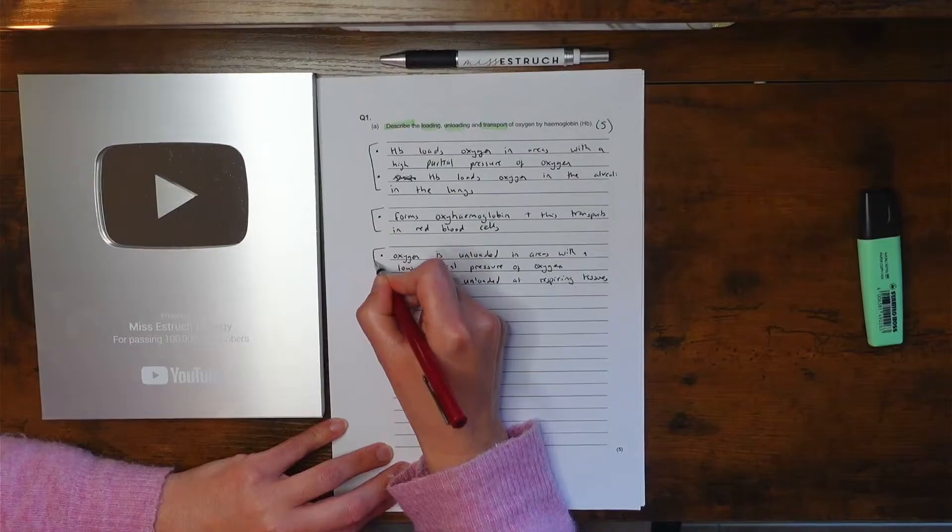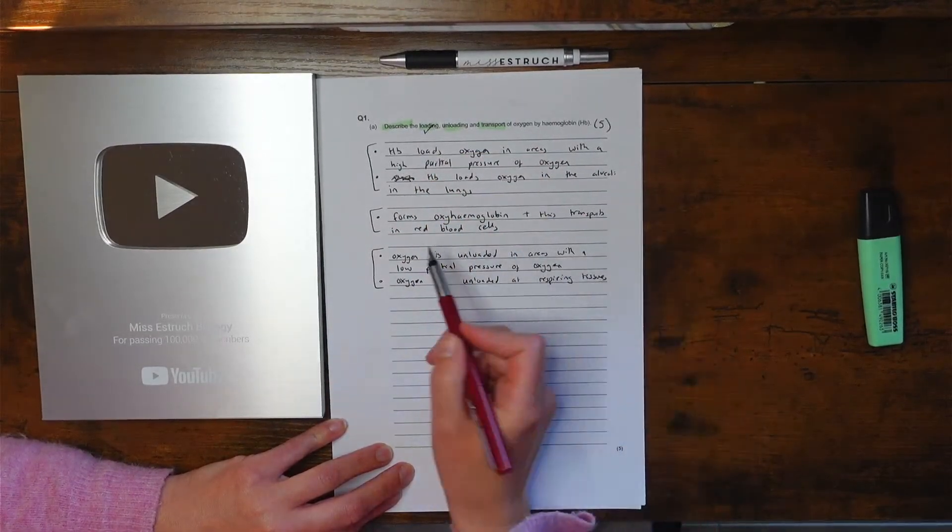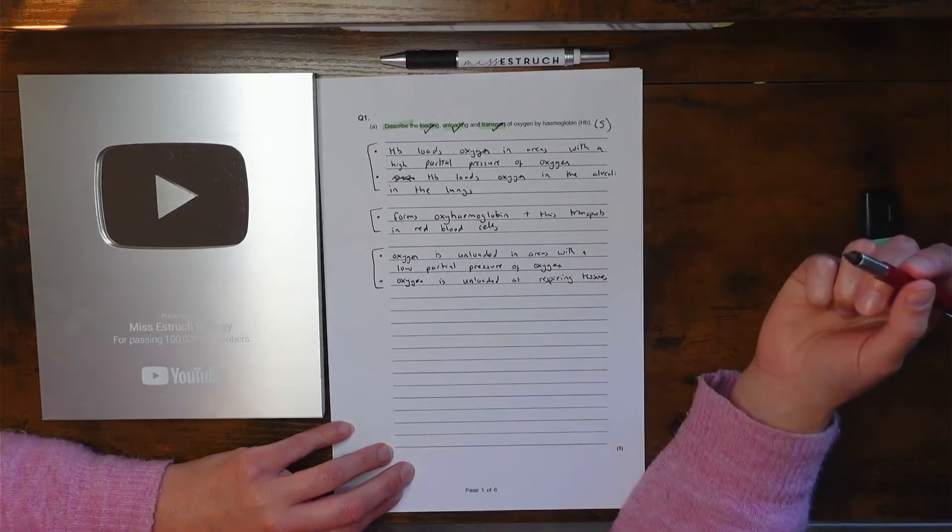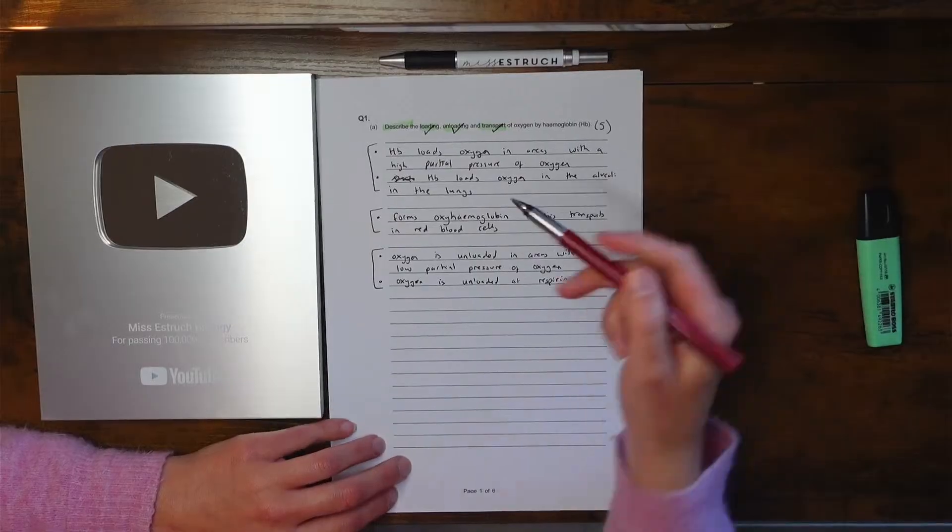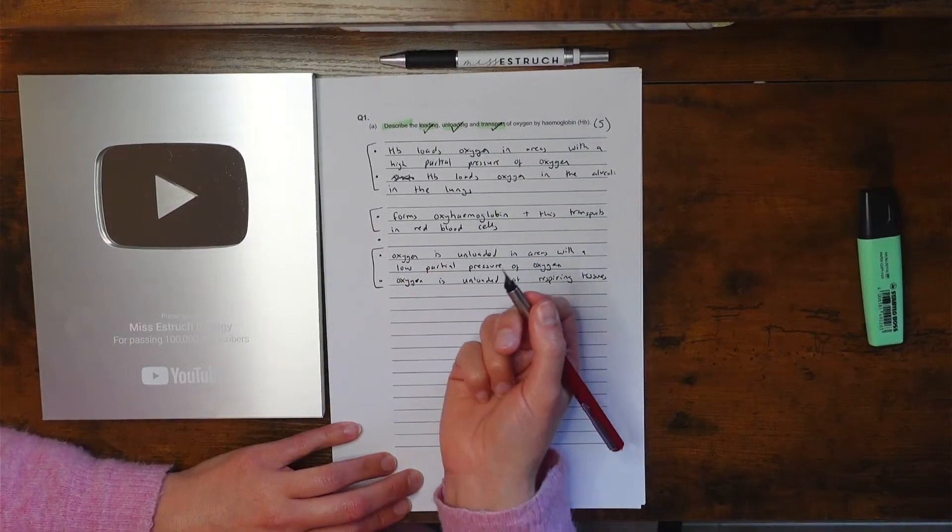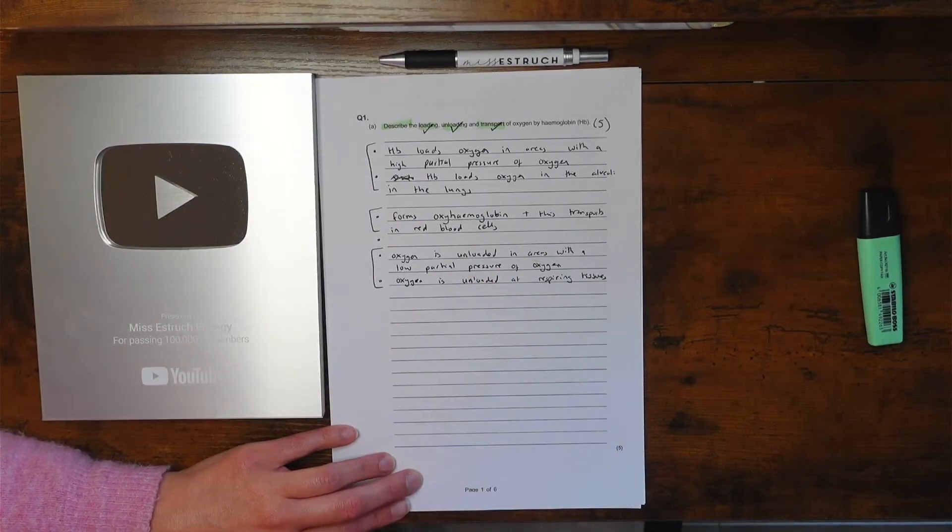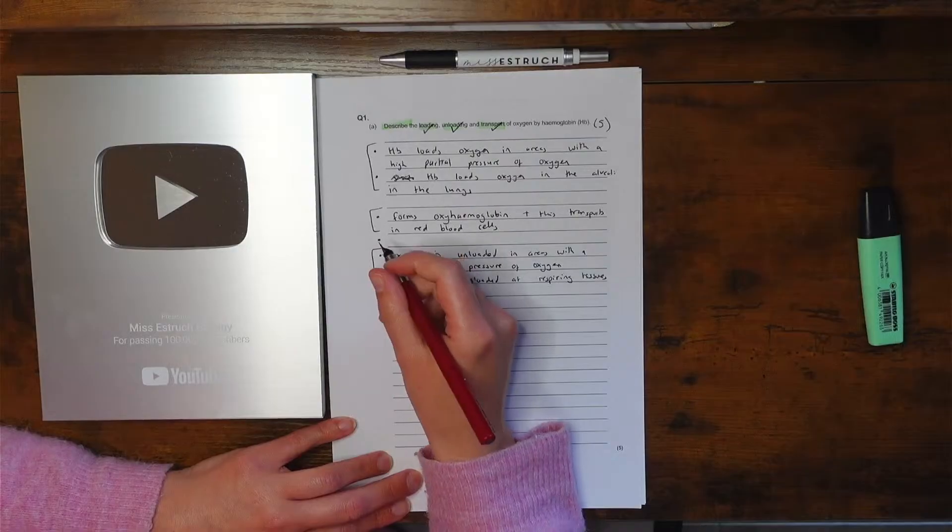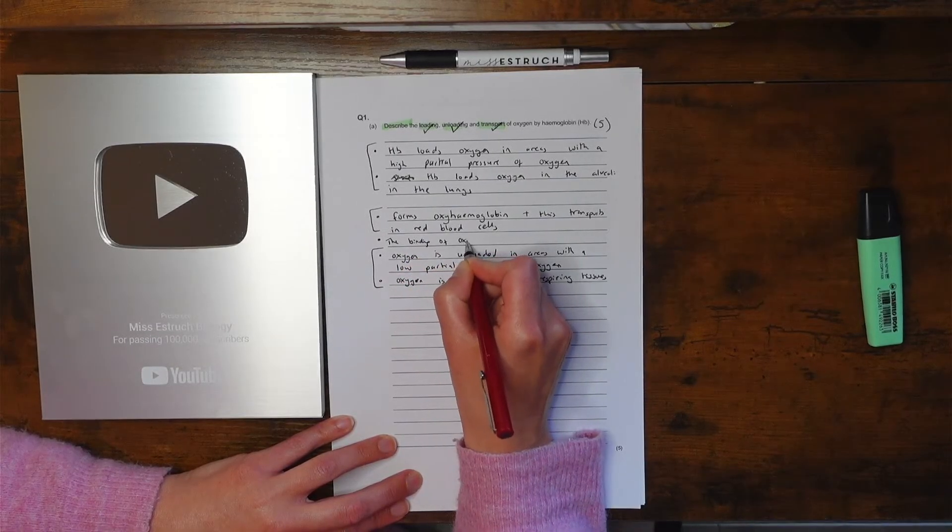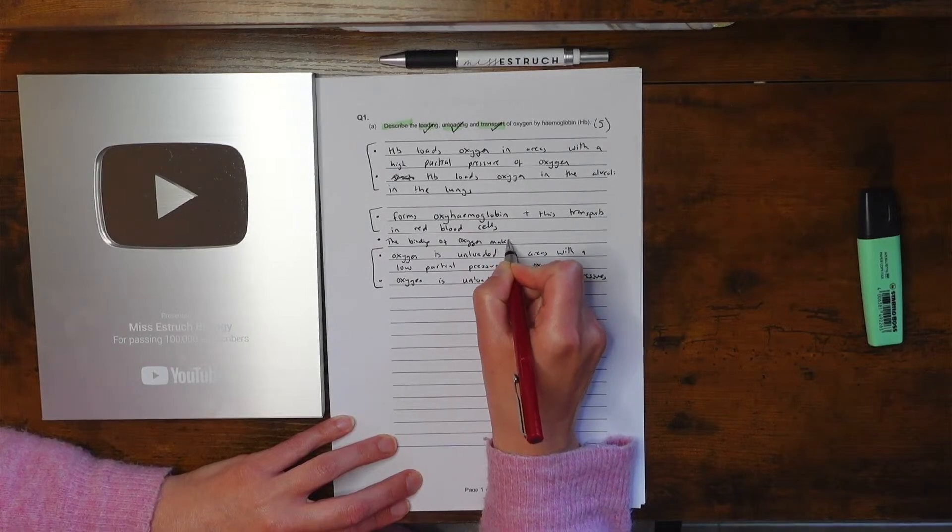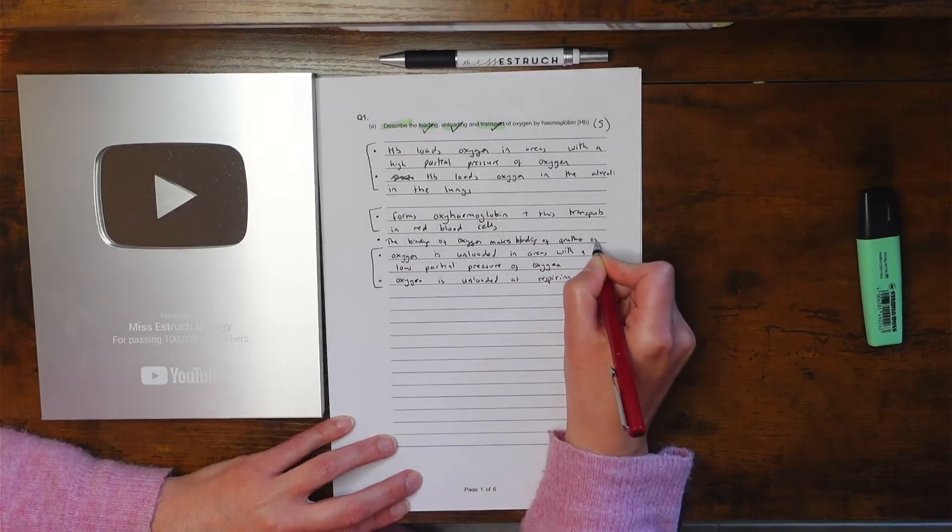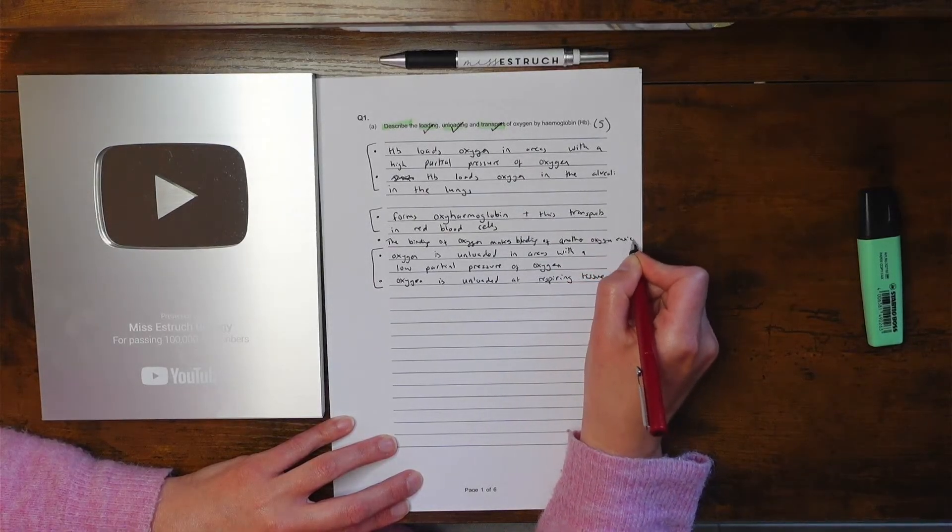So then I just double check I've definitely addressed the question. This bit here I've talked about loading, this bit here I've talked about transport, this bit here I've talked about unloading, and I do have five bullet points for the five marks. You could actually add in another mark if you wanted, because I've only done one on the transport here. So I could have as an extra mark for the transport something about cooperative binding. That would be my extra point you could have here. I could say the binding of oxygen makes binding of another oxygen easier. So I could have two points on transport as well.